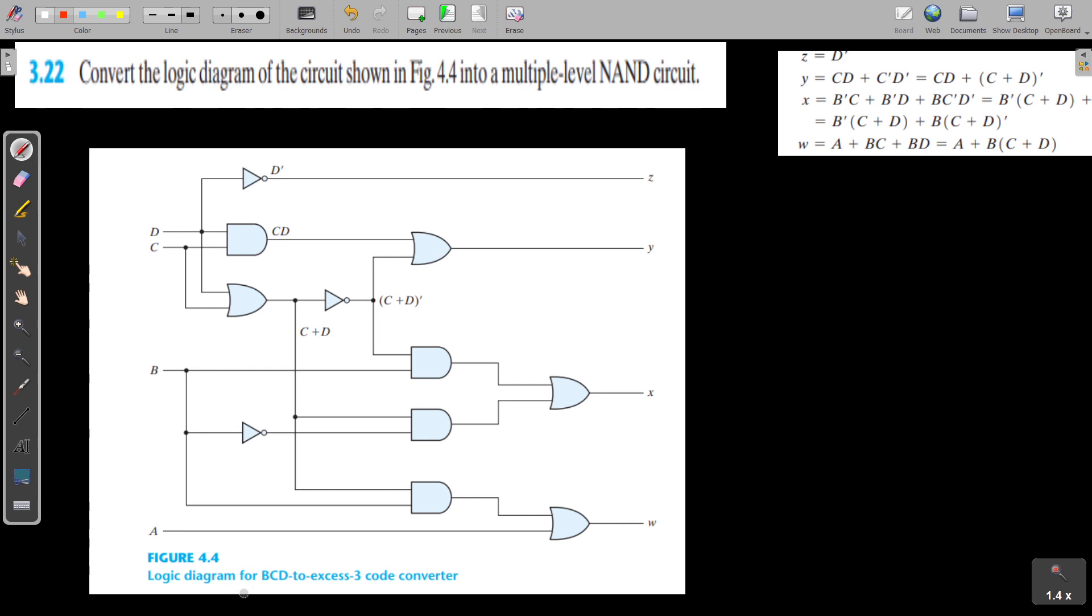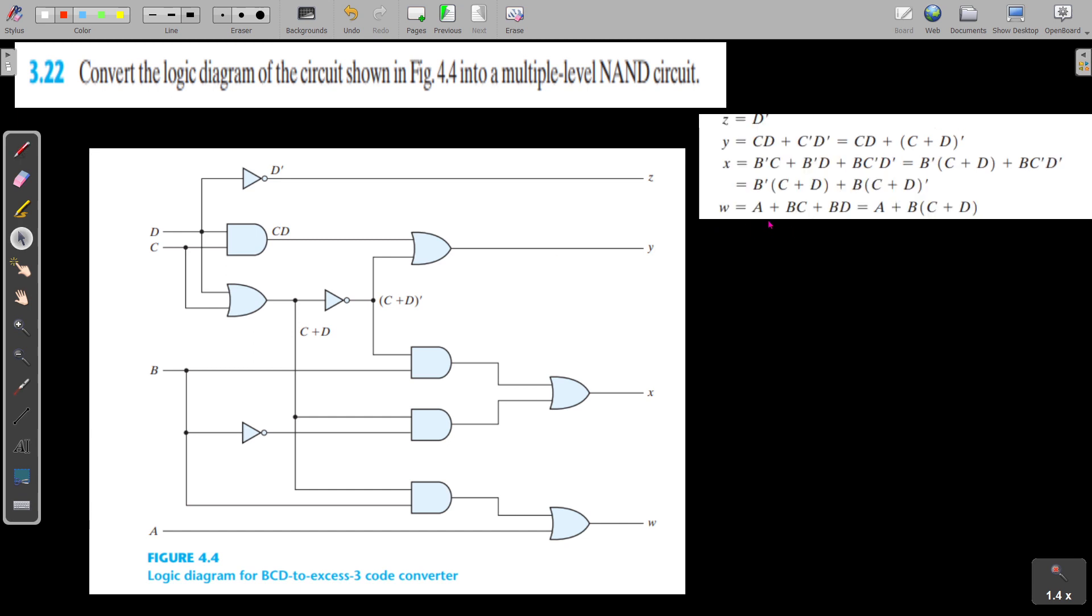Actually this is the logic diagram for BCD to XS3 code converter and the Boolean expression is given here as D is equal to D dash, Y is equal to CD plus C dash D dash, X is equal to B dash C plus B dash D plus BC dash D dash, and W is equal to A plus BC plus BD.